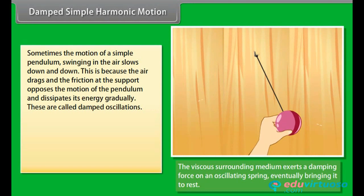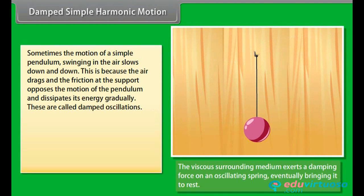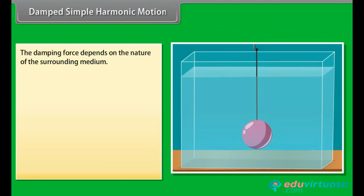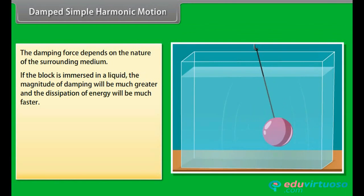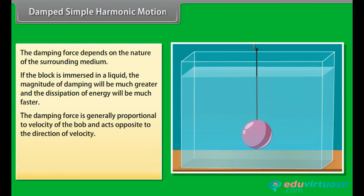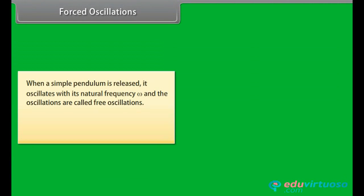Damped simple harmonic motion: sometimes the motion of a pendulum swinging in air slows down because air drag and friction at the support oppose the motion and dissipate energy gradually. These are called damped oscillations. In damped oscillation, energy is dissipated continuously, but for small damping the oscillations remain approximately periodic. The damping force depends on the surrounding medium — if the block is immersed in a liquid, damping is much greater. The damping force is proportional to velocity and opposite to it: Fd = −bv.